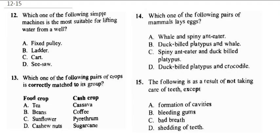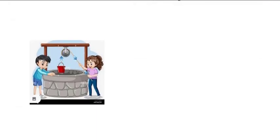Question 12 asks which simple machine is most suitable for lifting water from a well. You can use a seesaw, but the best option is a fixed pulley. You connect the fixed pulley on top of the well — the pulley is fixed and while pulling the rope, you can draw water out from the well.